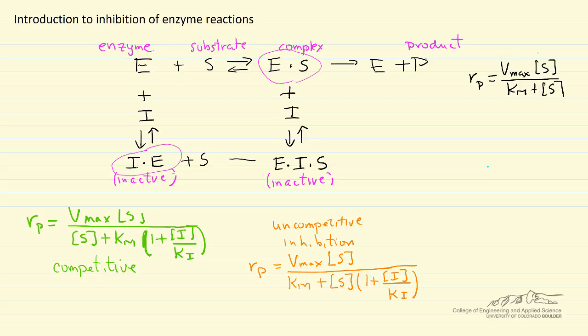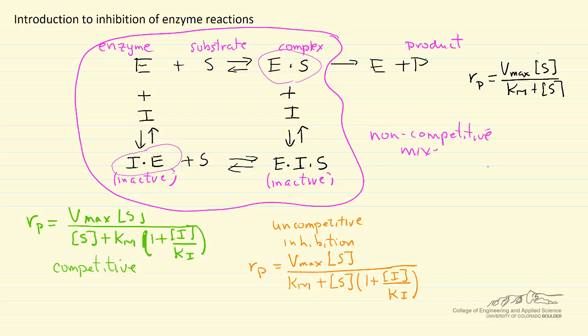So we're adding an additional reversible step, and now what we're saying is we have all of this together as non-competitive inhibition, also referred to as mixed inhibition. And then the rate expression for this, I'm not going to derive it here, but it's derived in another screencast, and so this is non-competitive or mixed inhibition of enzyme reacting with the substrate.